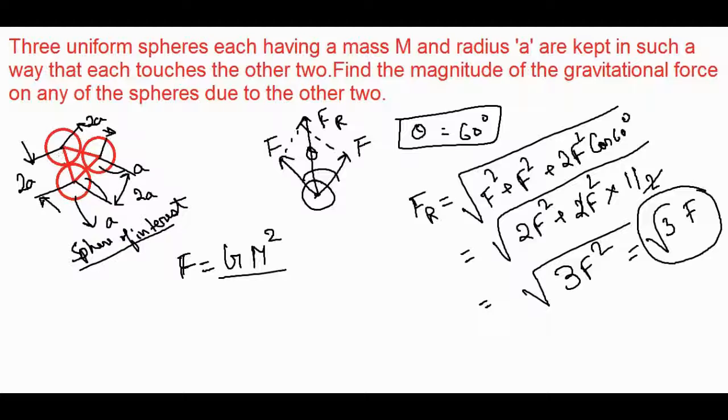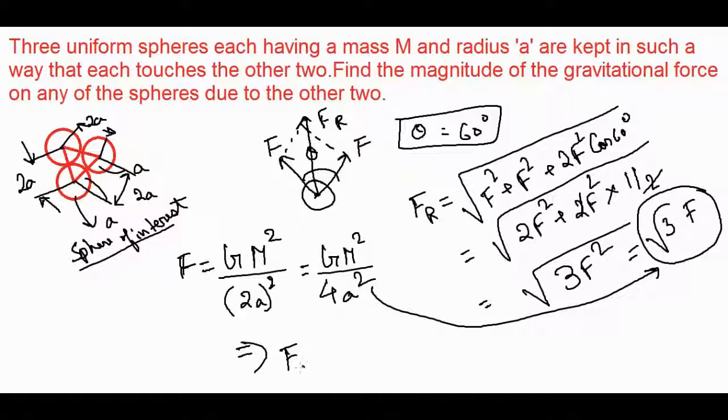This is equal to GM squared by 4a squared. So now I put this in here, and I get the resultant force on any of these spheres due to the other two equals root 3 times GM squared divided by 4a squared. So the answer is root 3 GM squared by 4a squared.